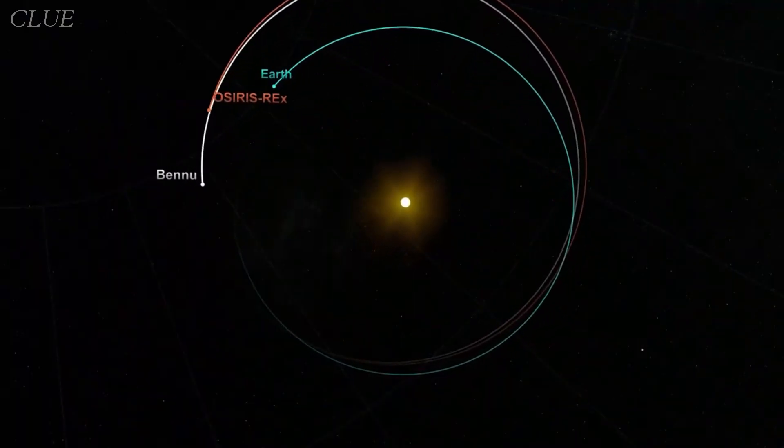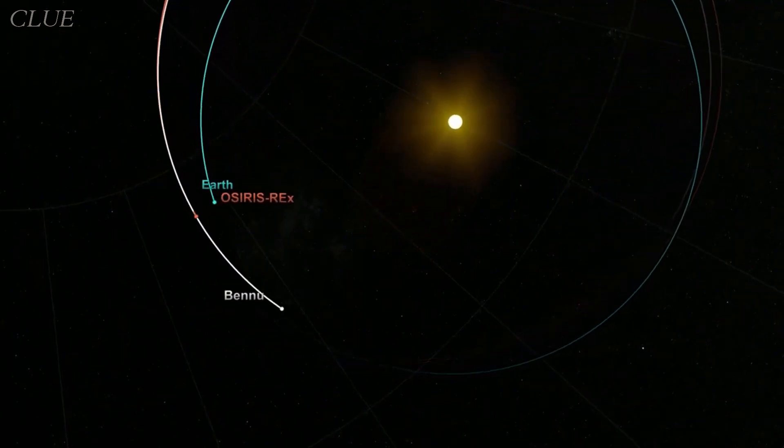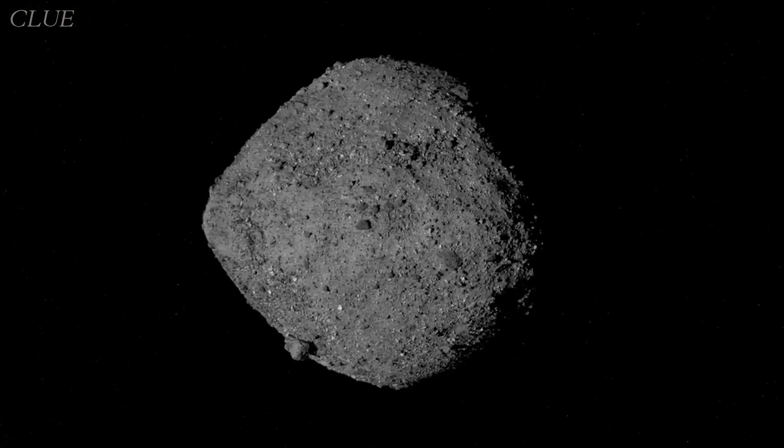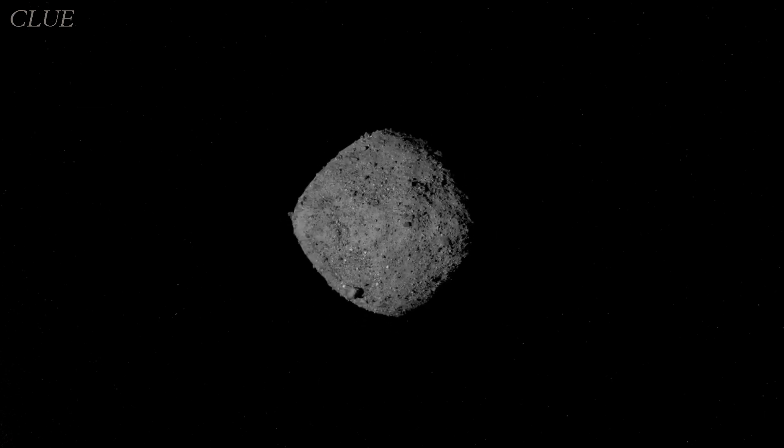On December 3, 2018, NASA announced that the OSIRIS-REx had reached Bennu, matching its speed in orbit at a mere 19 kilometers away.